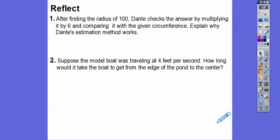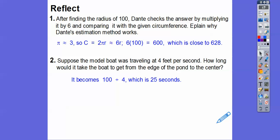All right. Let's try another one here, you guys. So anyways, after finding the radius of 100, Dante checks the answer by multiplying it by 6 and comparing it with the given circumference. Remember, the circumference was 628. So explain why his estimation works. Well, remember, the radius was 100. So what he did was, is he did six times 100. And that gave us the circumference to be about 600. And that was close to 628. So that told him that that was a reasonable answer right there. So that's what that's talking about. So suppose the model boat was traveling at four feet per second. So how long would it take the boat to get to the edge of the pond? Well, remember, the radius is still 100. So it's going to become 100 divided by four, which is going to be 25 seconds right there.